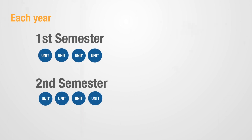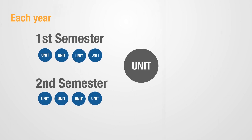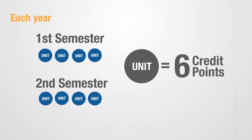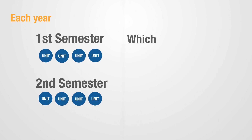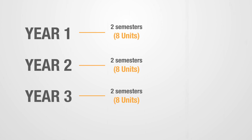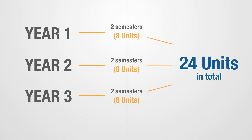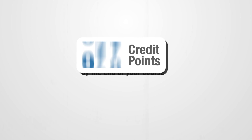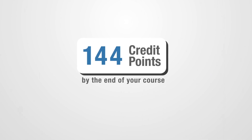Each year there are two semesters and you need to take four units per semester. Each unit is worth six credit points, which is equivalent to 24 credit points per semester. By the time you finish the three years, you would have completed six semesters — equivalent to 24 units — and altogether you will have 144 credit points.